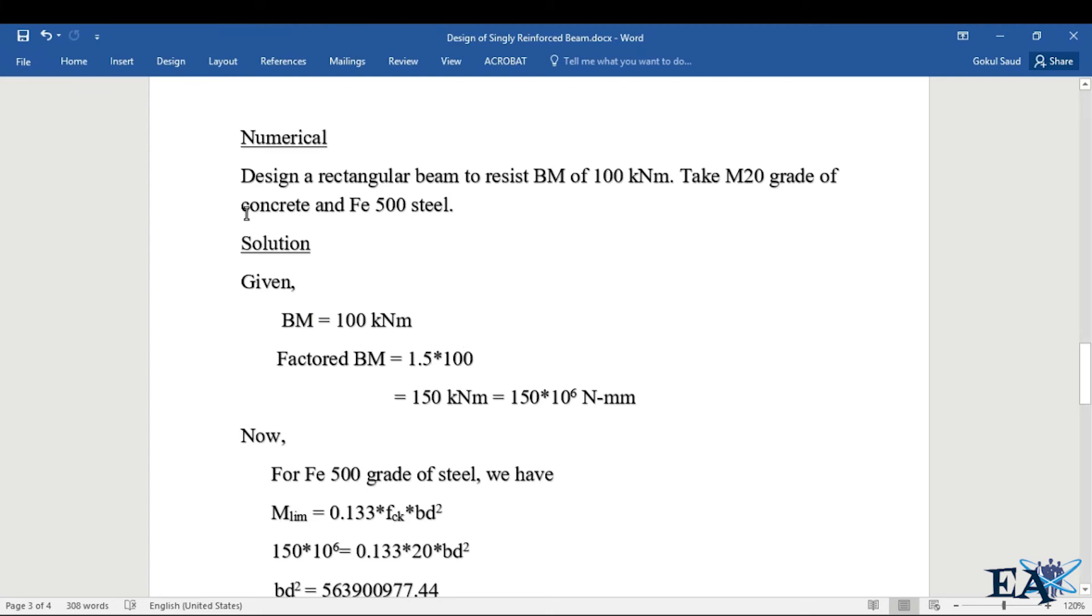Here the question says design a rectangular beam to resist BM of 100 kNm. Take M20 grade of concrete and Fe 500 steel. So we understand that the bending moment due to external load is 100 kNm, and characteristic strength of concrete is 20 N/mm², and yield strength of steel is 500 N/mm².